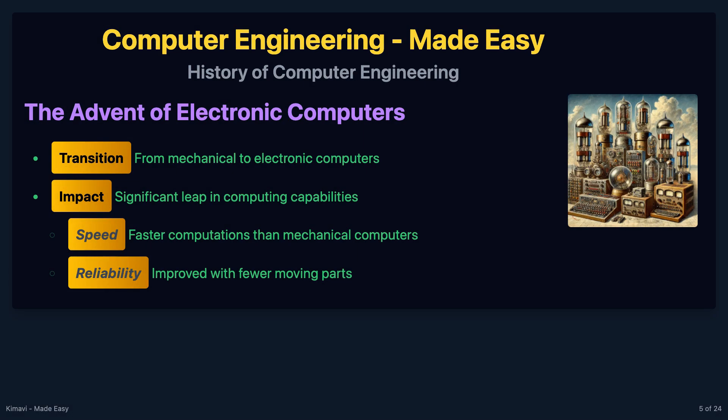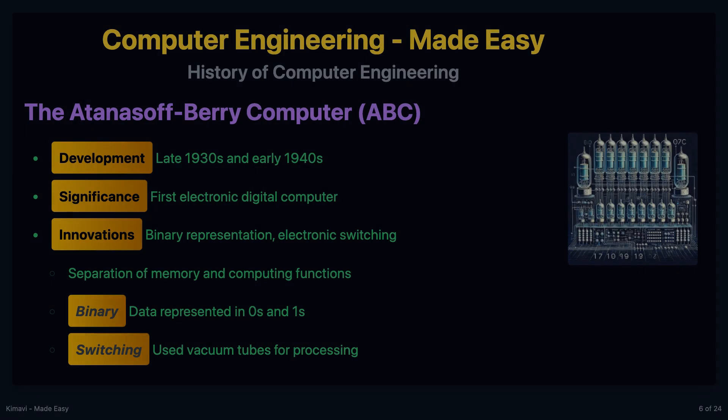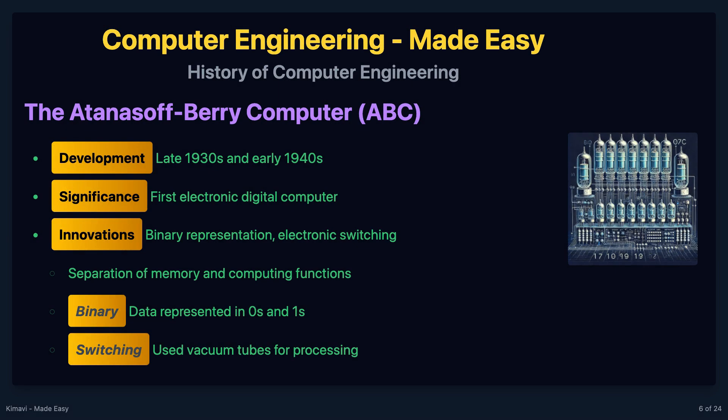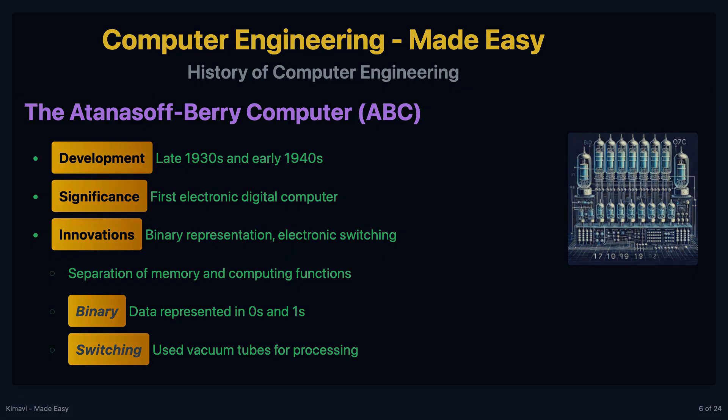The transition from mechanical to electronic computers marked a significant leap in computing capabilities. Let's look at some of the pioneering electronic computers. Developed by John Atanasoff and Clifford Berry in the late 1930s and early 1940s, the ABC was the first electronic digital computer. It introduced several key concepts, including binary representation of data, electronic switching using vacuum tubes, and the separation of memory and computing functions.